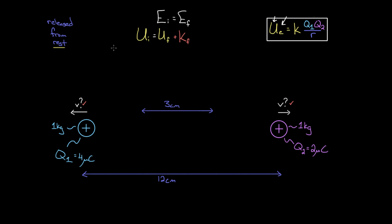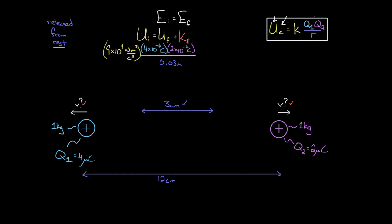Using our formula for electrical potential energy, the initial electric potential energy is K — nine times ten to the ninth — multiplied by Q1, which is four microcoulombs, that's four times ten to the negative sixth coulombs, multiplied by Q2, which is two microcoulombs, two times ten to the negative sixth, divided by the initial distance of three centimeters. But I can't plug in three — that's in centimeters. To get units of joules and speeds in meters per second, I have to convert: three centimeters is 0.03 meters. And I don't square this R — the R in the denominator is not squared.